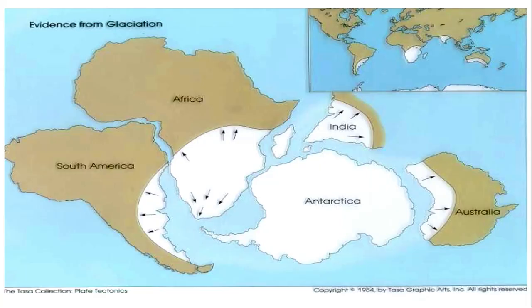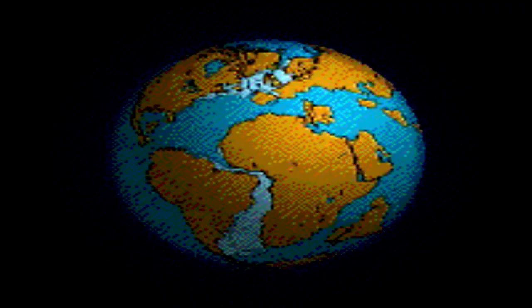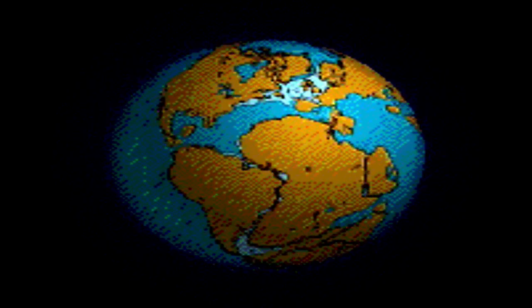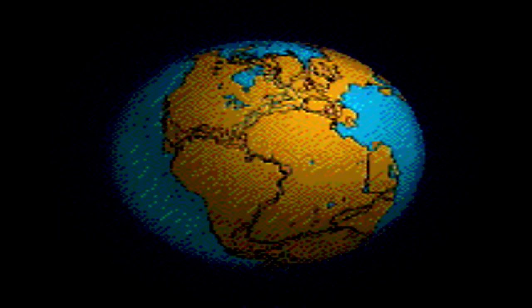Approximately 175 million years ago, Pangaea started breaking. Because of this breaking, India started its journey. As you can see in this presentation, India is moving towards north and east. India travels and collides with the Eurasian plate, where it is presently located. Because of this collision, earlier there was a geosyncline here known as Tethys. The sediments brought by the Indo-Brahma river got uplifted and folded, leading to the formation of the Himalayas.